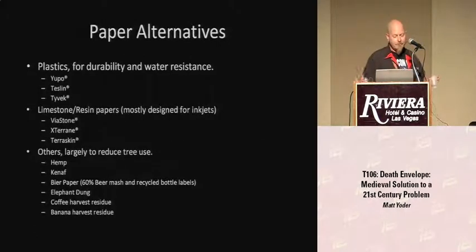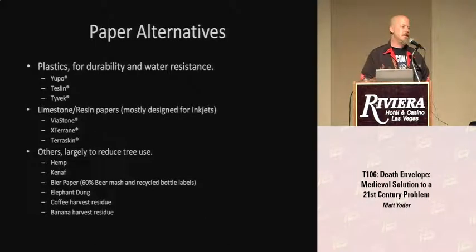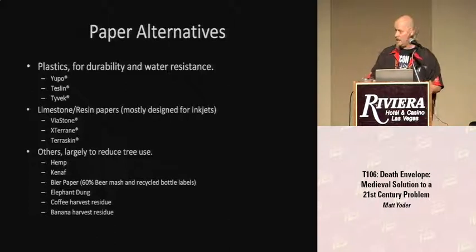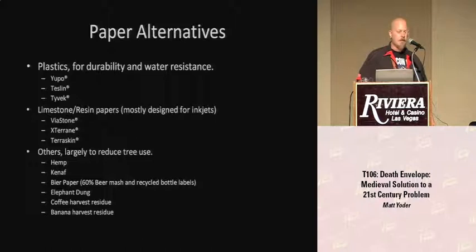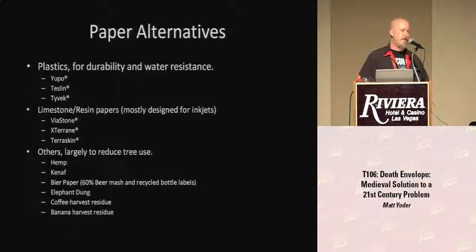Just a discussion of some options if you want to avoid paper for whatever reason — durability. There are multiple plastic replacements for paper, including Write in the Rain and Yupo. More recently, limestone is being made into paper for inkjets — I've never tried it, but I found it in my research. And if you just want to save some trees, there are lots of other fibers being made into paper, many of them very good. One of my favorites is Lokta from Thailand — this stuff is so durable it's been used for contracts for thousand-year leases in Thailand.